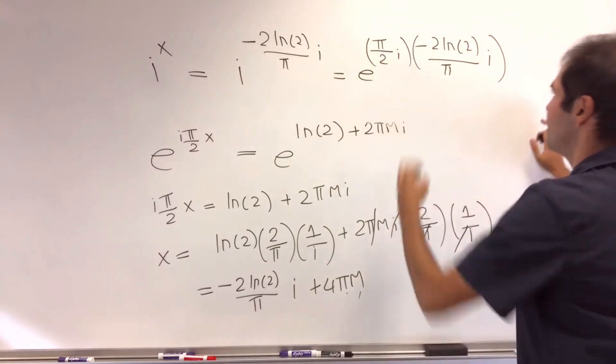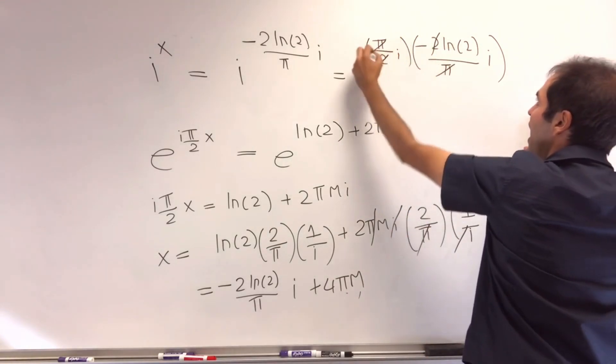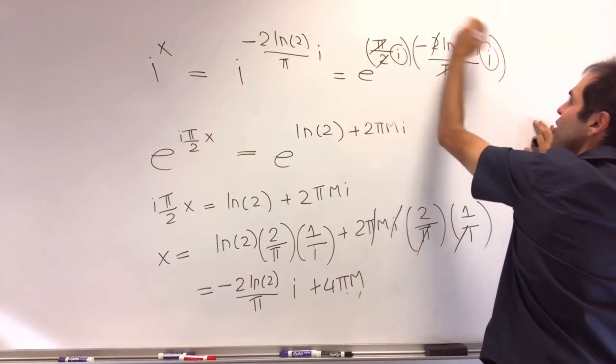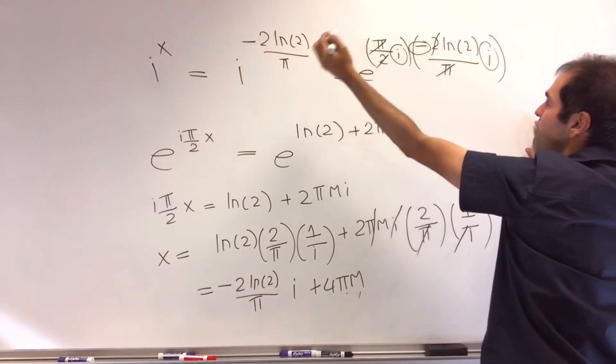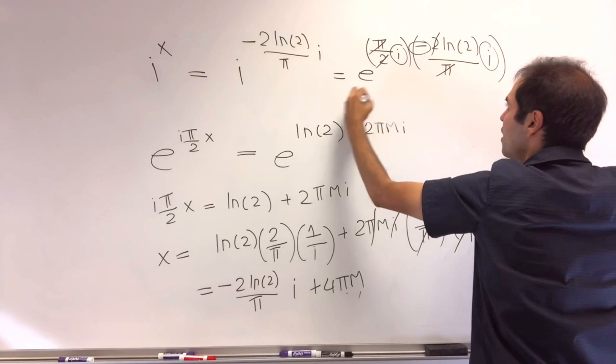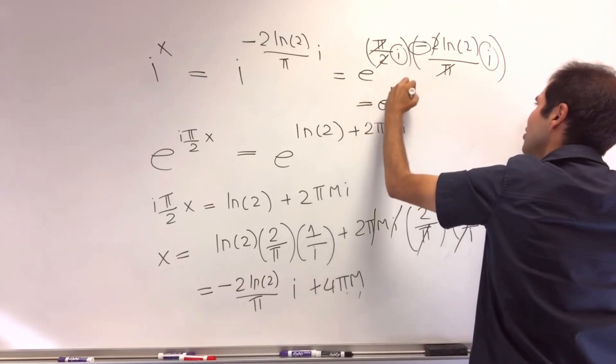And the nice thing is, again, the 2's cancel out, the i's cancel out, i squared, that is minus 1, so times minus 1, that's 1. And then you have e ln of 2, and that is 2.